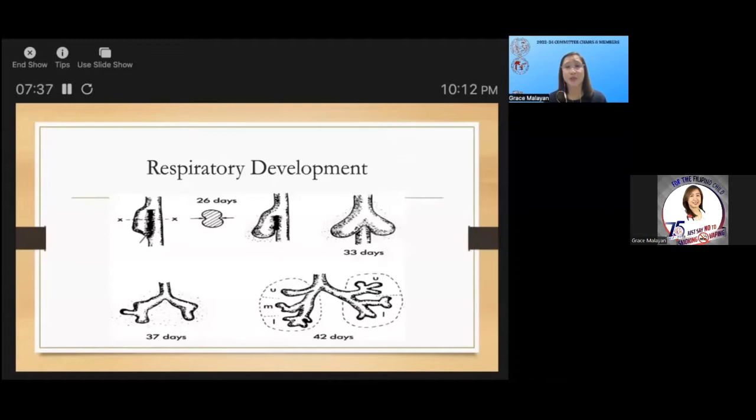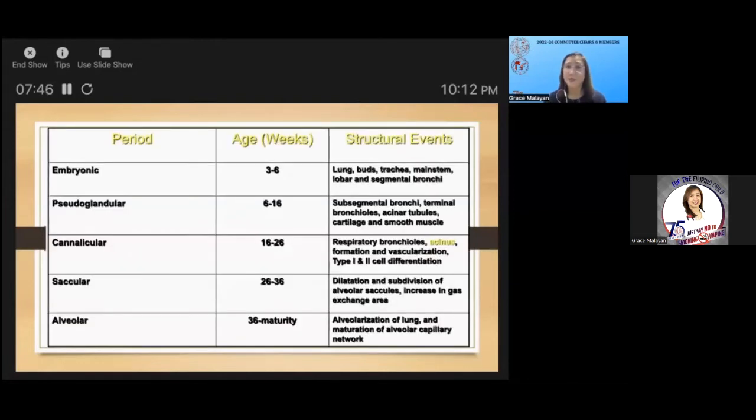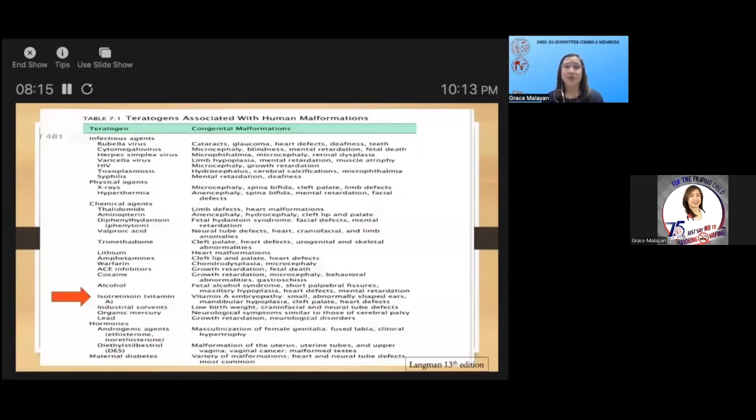This is a schematic representation of respiratory development. I would like to review the different periods of lung development: the first is the embryonic period, three to six weeks, followed by the pseudoglandular, canalicular, saccular, and alveolar period. Infants who are exposed to teratogens during the first trimester are at risk to develop congenital anomalies that may affect vital organs such as the respiratory system.